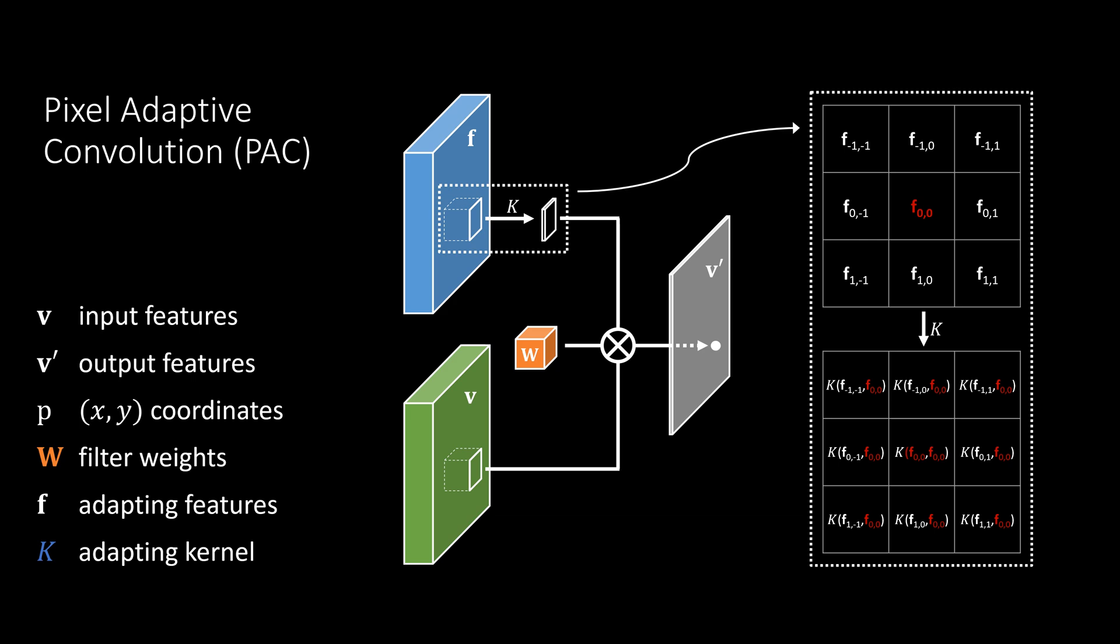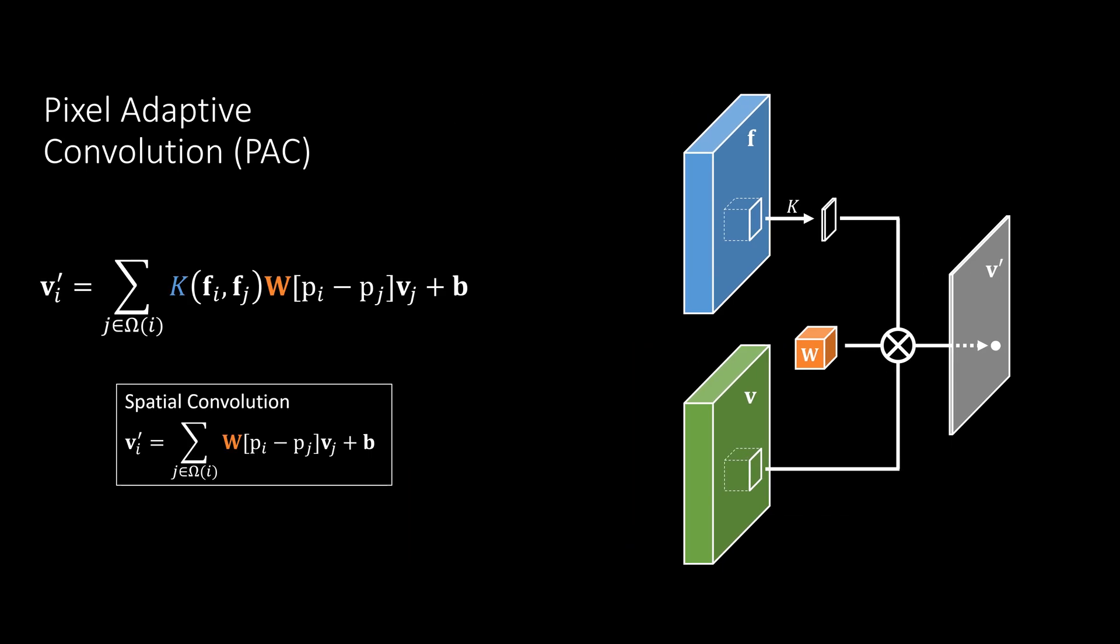Because the filters are adapted differently across pixel positions, we call our operation pixel-adaptive convolution, or PAC in short. In definition, the only modification from a spatial convolution is the added term representing the adapting kernel K.